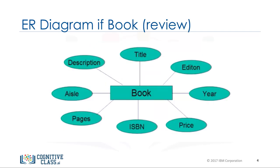An entity relationship diagram, or ER diagram, for the entity book would look like this. The entity book is drawn as a rectangle, and the attributes are drawn as ovals. Attributes are certain properties of that entity.